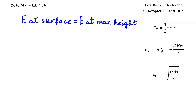In this question we have to find the maximum height reached by the probe in terms of the radius of the planet. The key concept that we will use here is that the energy of the probe at the surface of the planet is equal to the energy of the probe at its maximum height.